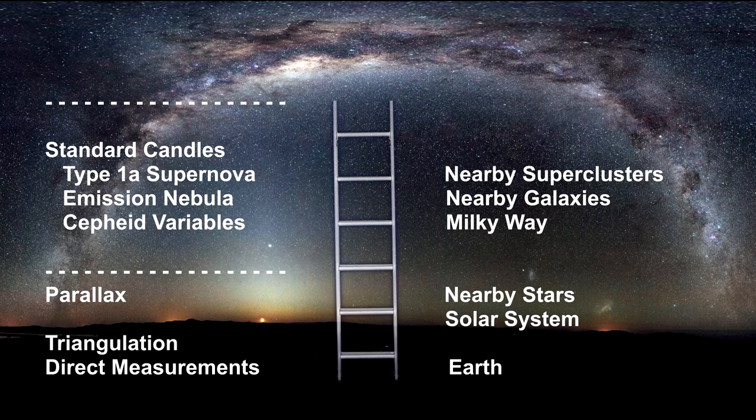Some of the most prominent are Cepheid variable stars, emission nebulae, and type 1a supernovae. These methods can take us across the Milky Way, out to nearby galaxies, and into local supergalaxy clusters.